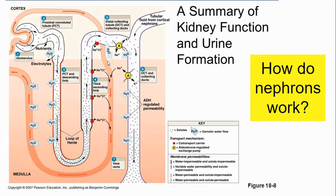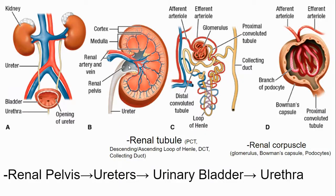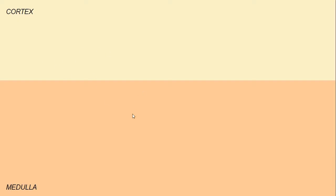I'm going to break down this complicated model of a nephron step by step to help you understand how nephrons actually work, because these are the functional units of your kidney. We have the cortex and the medulla — that's the first distinction. Blood vessels bring blood in and carry it back out.